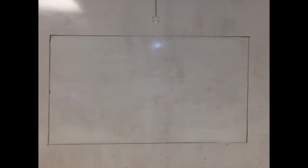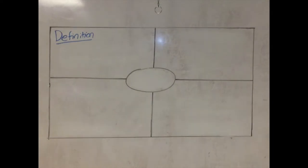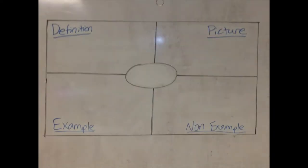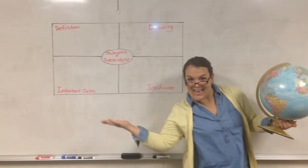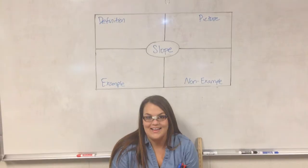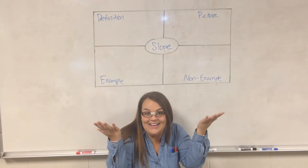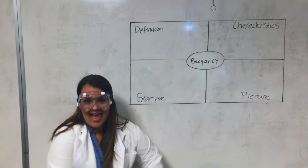The Frayer Vocabulary Model consists of four sections that you can vary from class to class. You can use the Frayer Model when teaching vocabulary or content-related topics. It works in social studies, math, and even science.